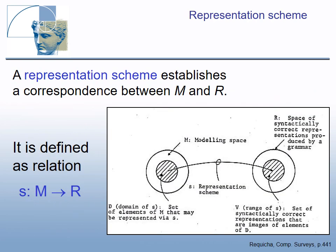M is a modeling space — the space of all possible sets. Domain is a subset of M. R is the space of syntactically correct representations, i.e., symbol structures. V is a subset of R. S is a mapping of D to V, meaning that for any element of D, a solid object, there is only one corresponding symbolic structure from V. The mapping S is called the representational scheme.